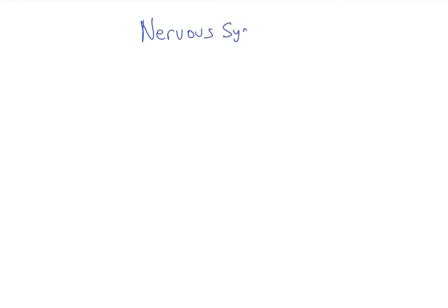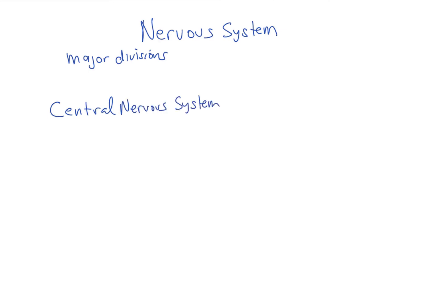We're going to talk about the major divisions of the nervous system. First we have the central nervous system or CNS. It's made up of the brain, spinal cord, and the optic nerves — cranial nerve 2 — that carry vision information.